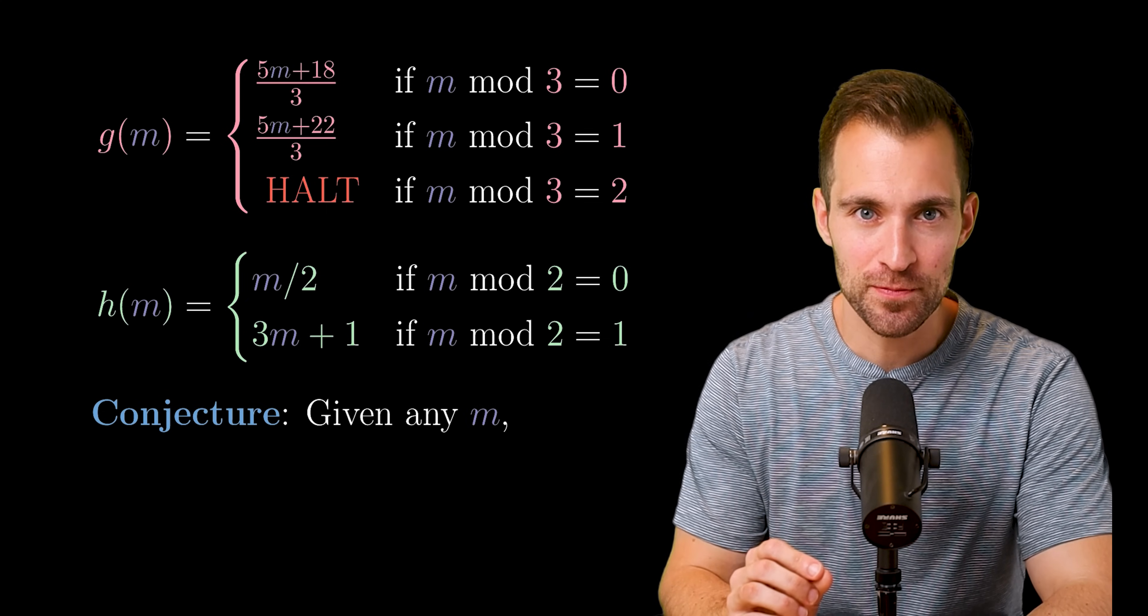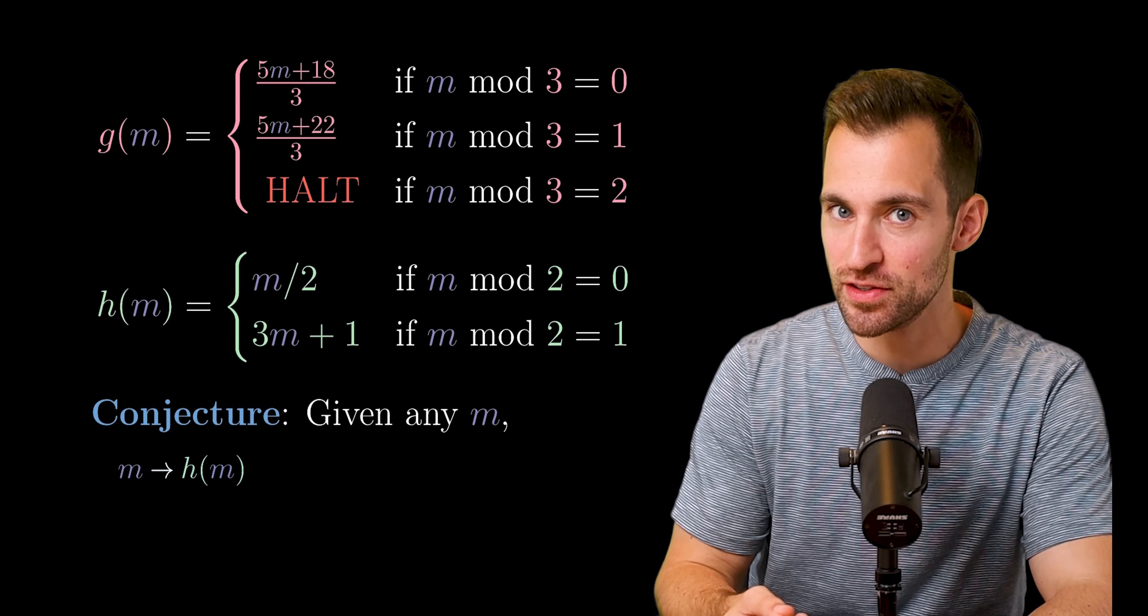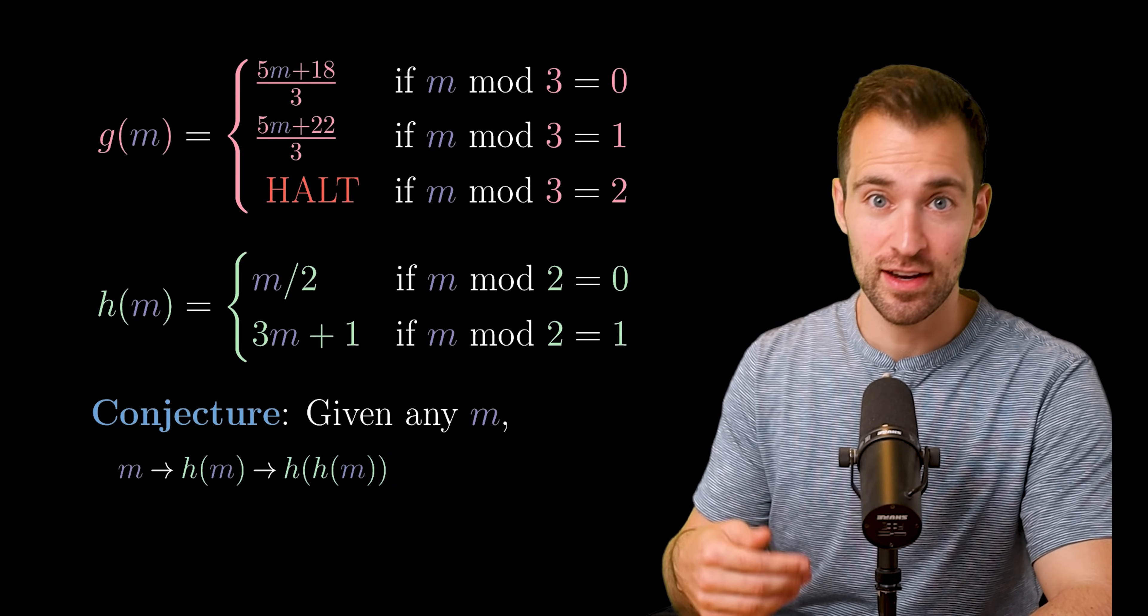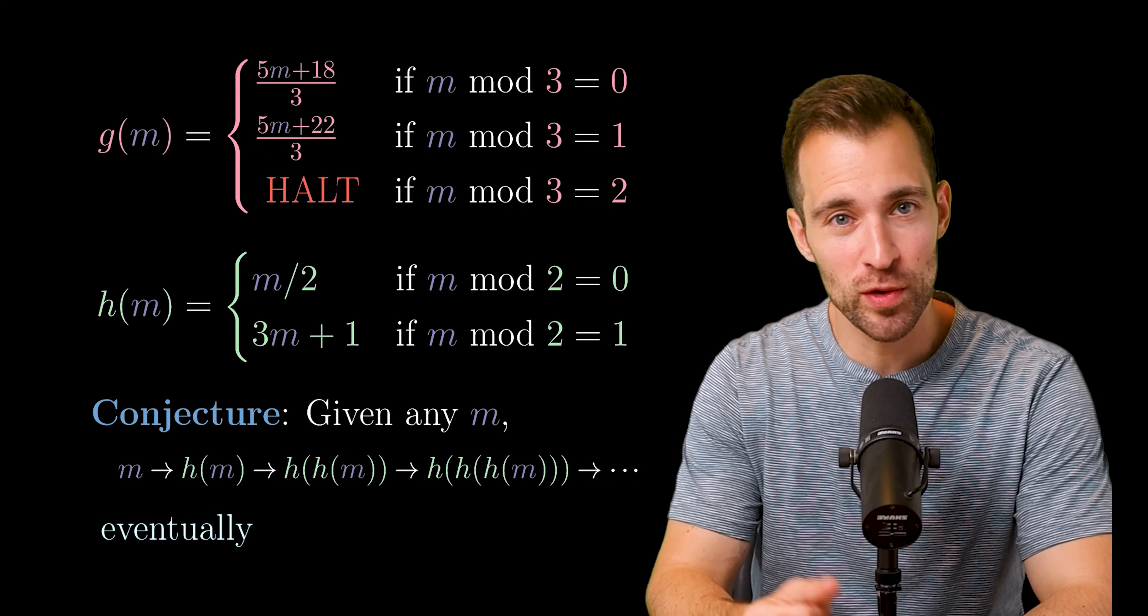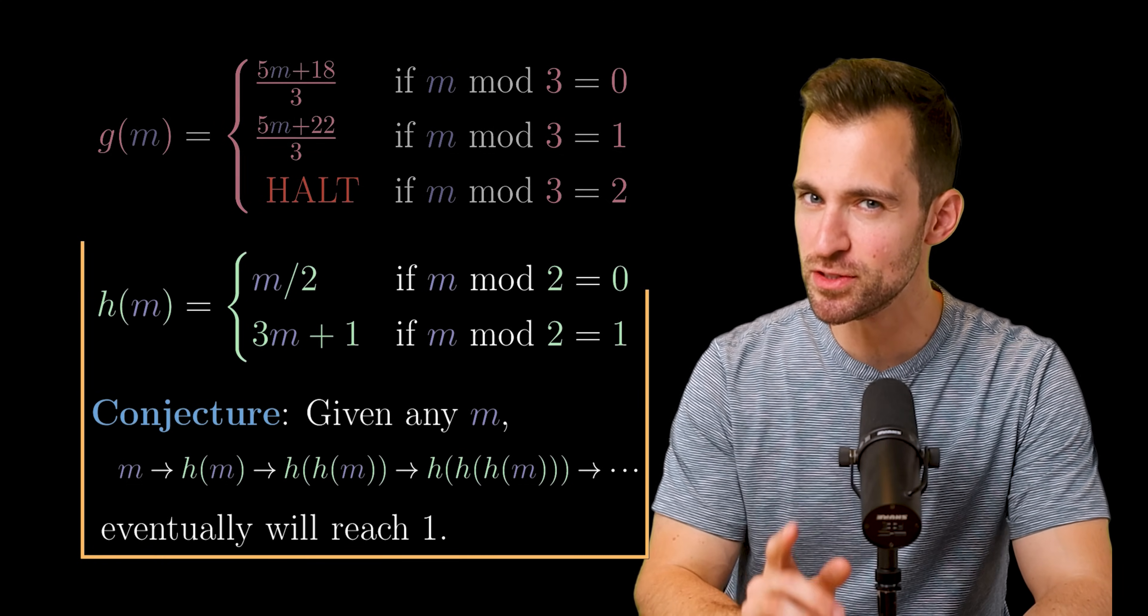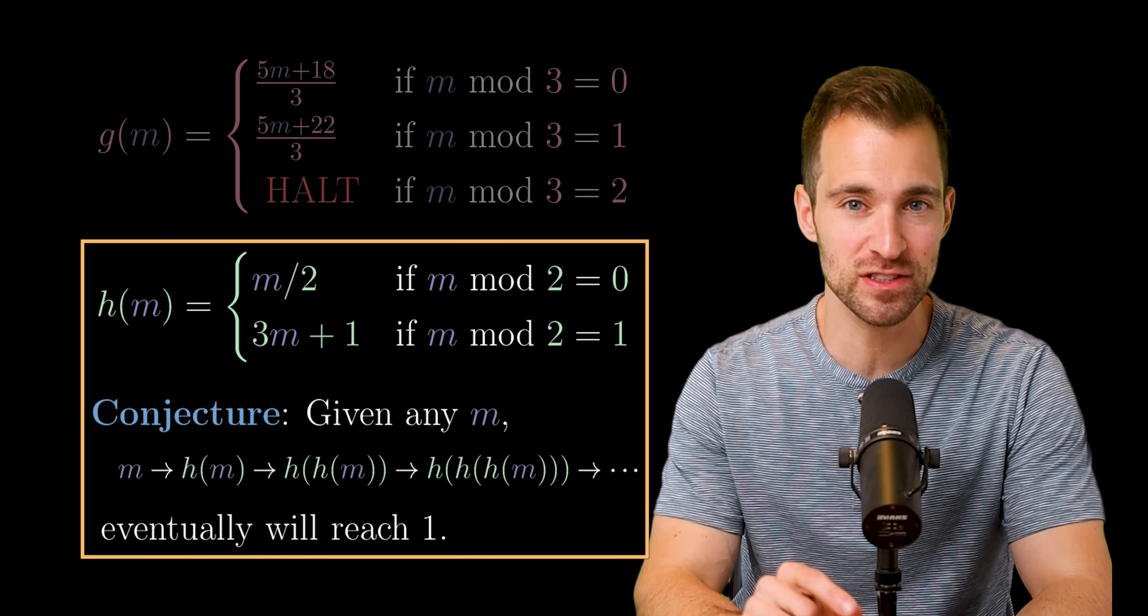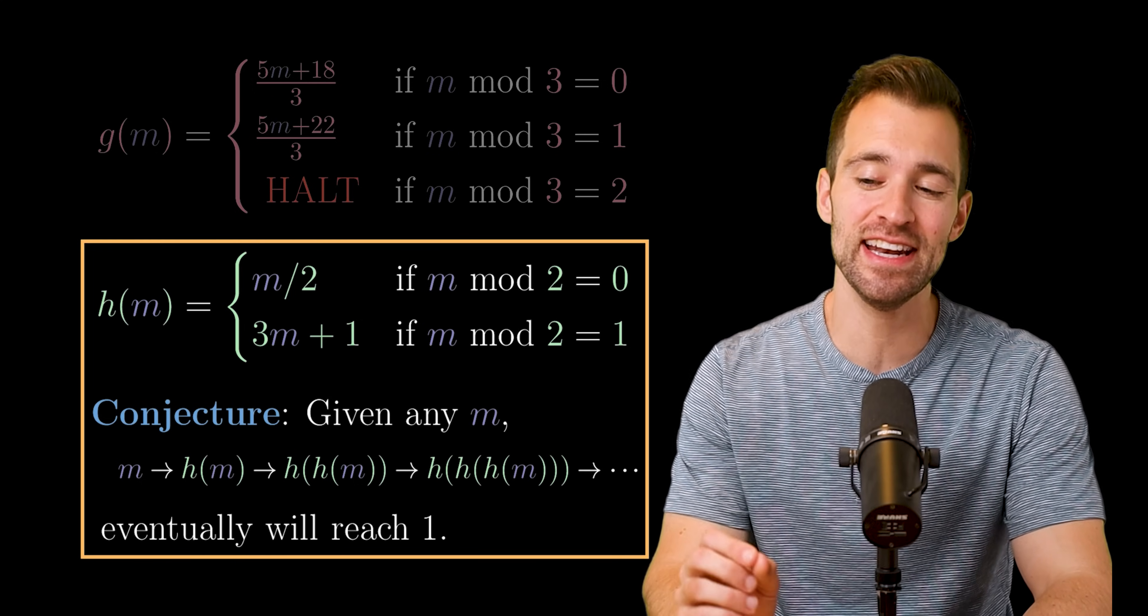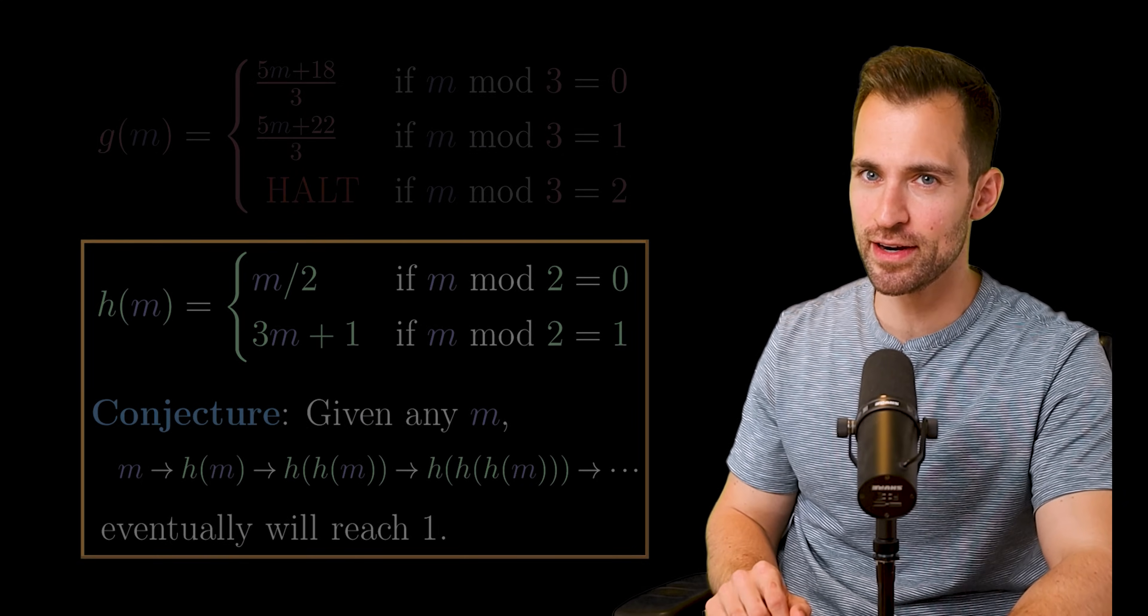And what is the Collatz conjecture? It states that given any m, if you start with that m, then apply the Collatz function, and apply it again, and again, and keep doing that, then eventually we will reach one. And the mysterious thing about Collatz is, it's very simple to describe, but it behaves chaotically.